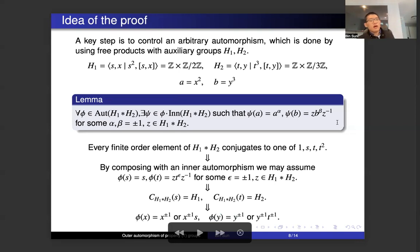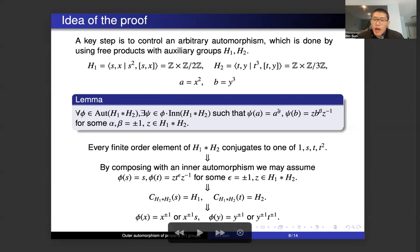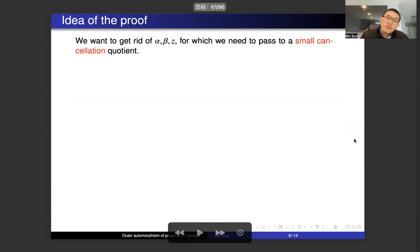So this is the first observation, and already here we see that given an arbitrary automorphism of the free product, we are able to say something specific about it. We also notice that we don't want these powers alpha and beta, nor this element z. I want to say whether it's possible to get alpha equals 1, beta equals 1, and z is the identity. And this is done using small cancellation theory.